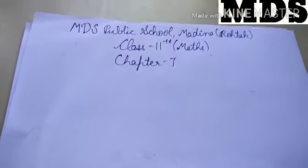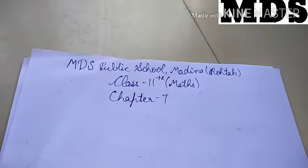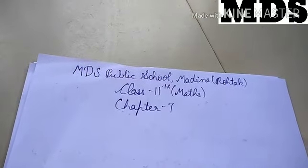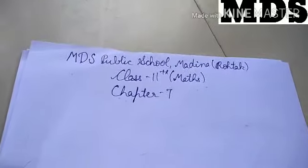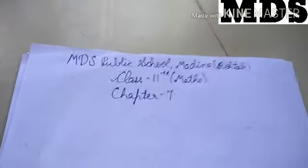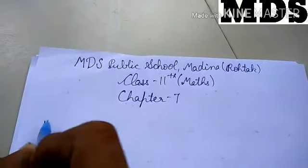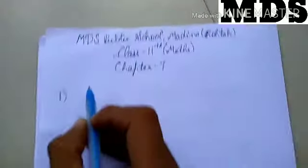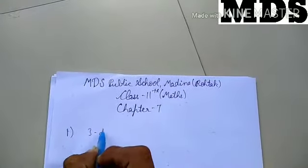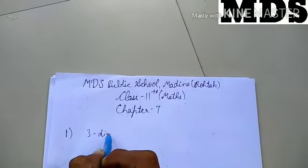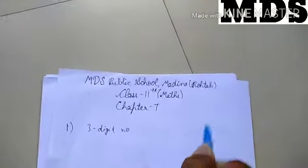The first question is: how many 3-digit numbers can be found using digits 1 to 9 if no digit is repeated? We have to make 3-digit numbers.